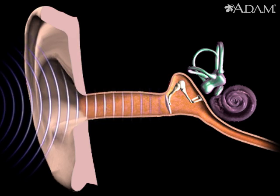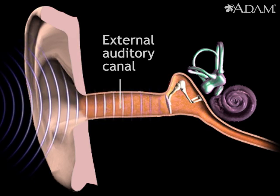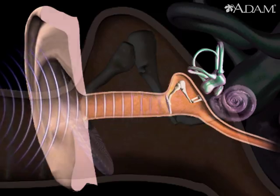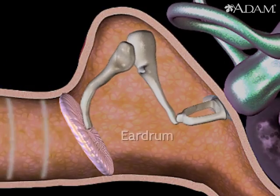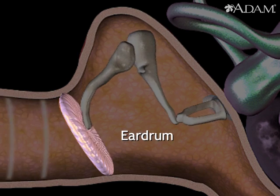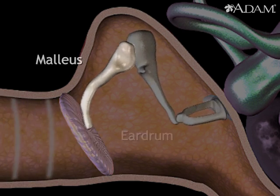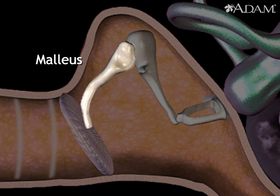Sound waves entering the ear travel through the external auditory canal before striking the eardrum and causing it to vibrate. The eardrum is connected to the malleus, one of three small bones of the middle ear.